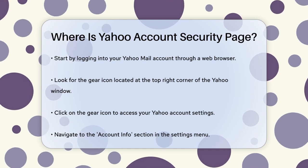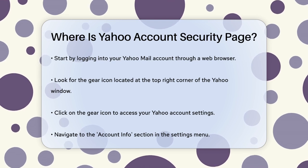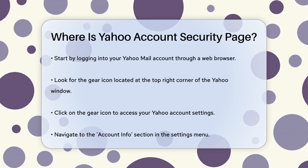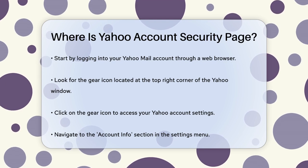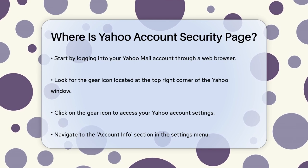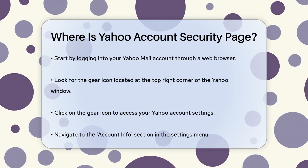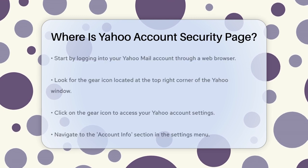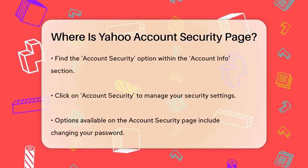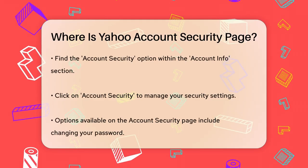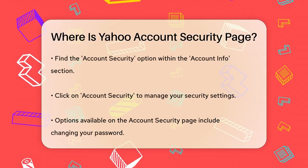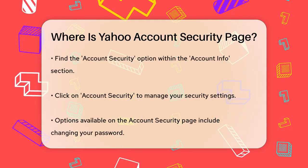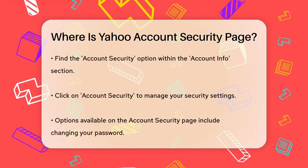To get to the Yahoo Account Security page, you need to start by logging into your Yahoo Mail account through your web browser. Once you're logged in, look for the gear icon at the top right corner of the Yahoo window. Clicking on this gear icon will take you to your Yahoo account settings.